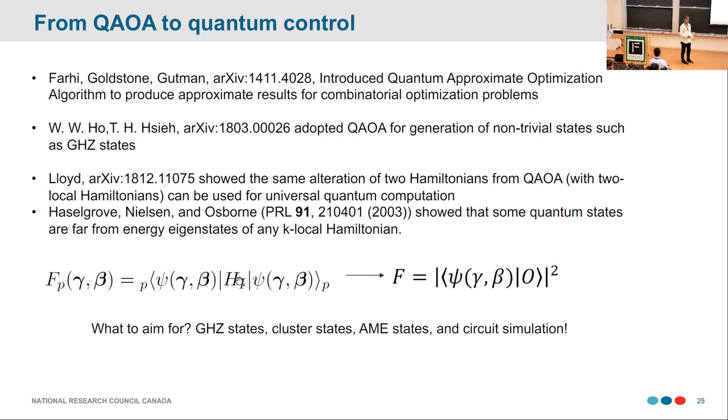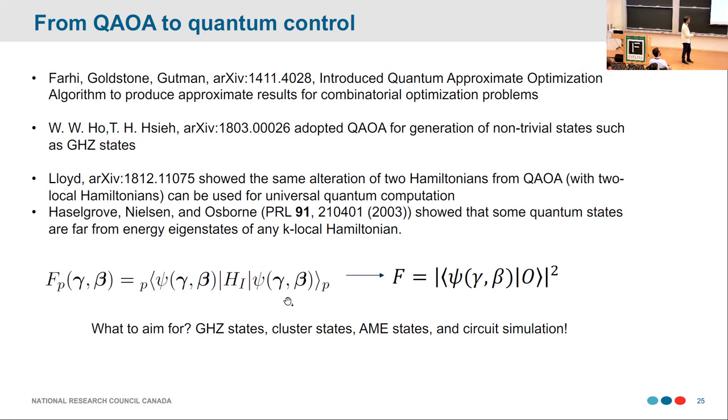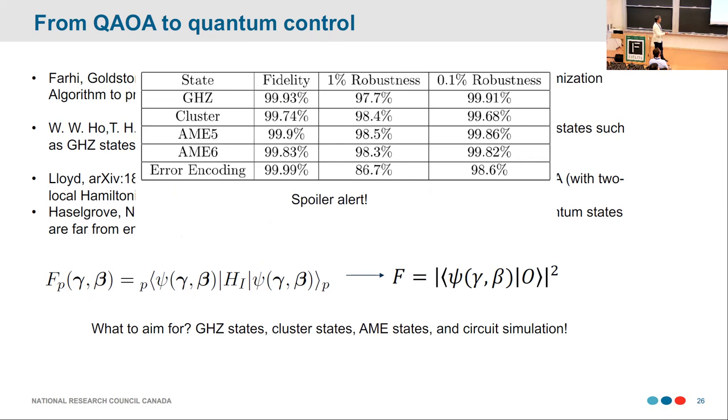For that, I just need to change the cost function of my optimization. So instead of going from this being as close as possible to an energy eigenstate of this interacting Hamiltonian, I just look at the fidelity of this state that comes out at the end of the dynamics with respect to psi O being any objective state that I like. So I pick a state and I try to get as close as possible to it. And what to pick? There's GHZ state, cluster states, absolutely maximally entangled states. And also, why not? We should do circuit simulations as well. It doesn't have to be state preparation. So spoiler alert, we tried all these things. And with at least two nines, we can reach all of them. But that's not the interesting part.